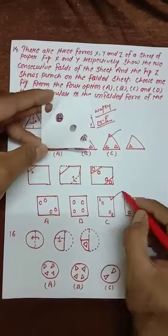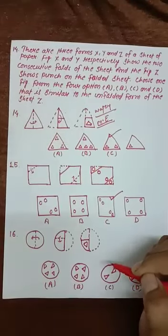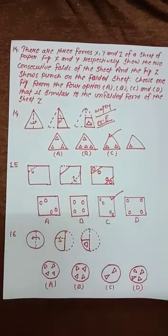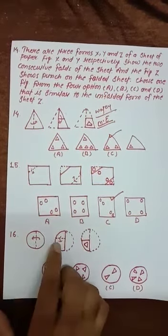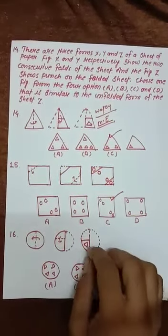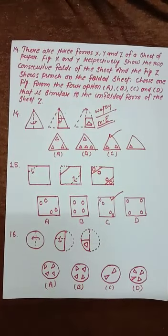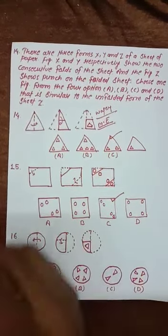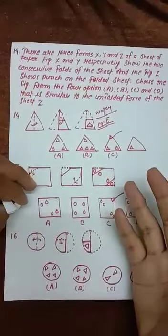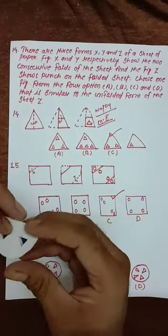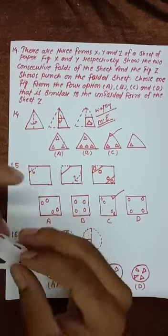Now come to the next question. A circle is folded twice, and in the end there is a mark of a triangle. So after unfolding, what kind of figure will we get? Let's see.